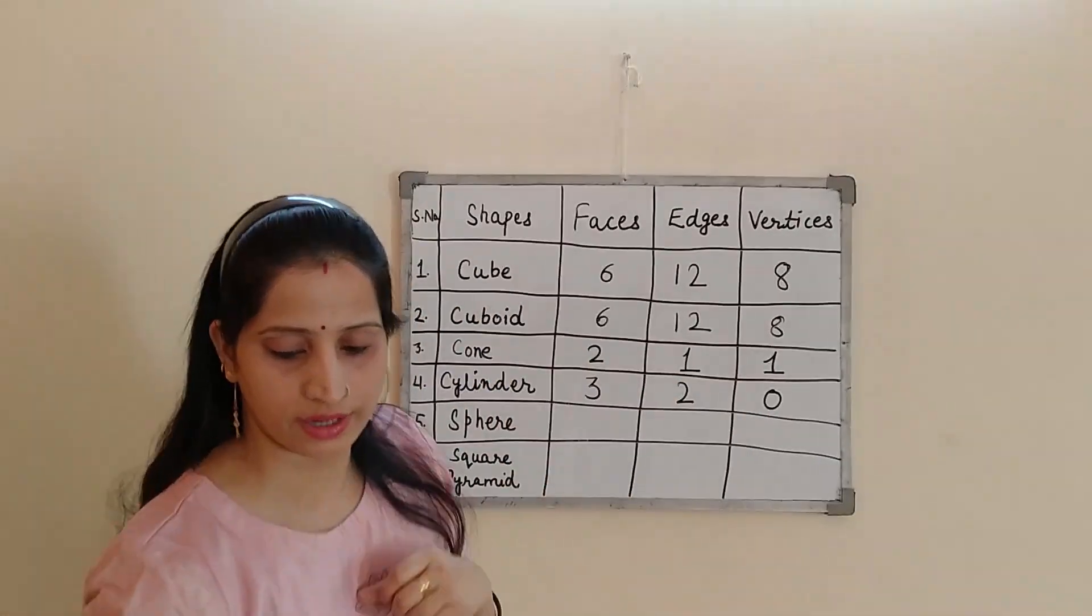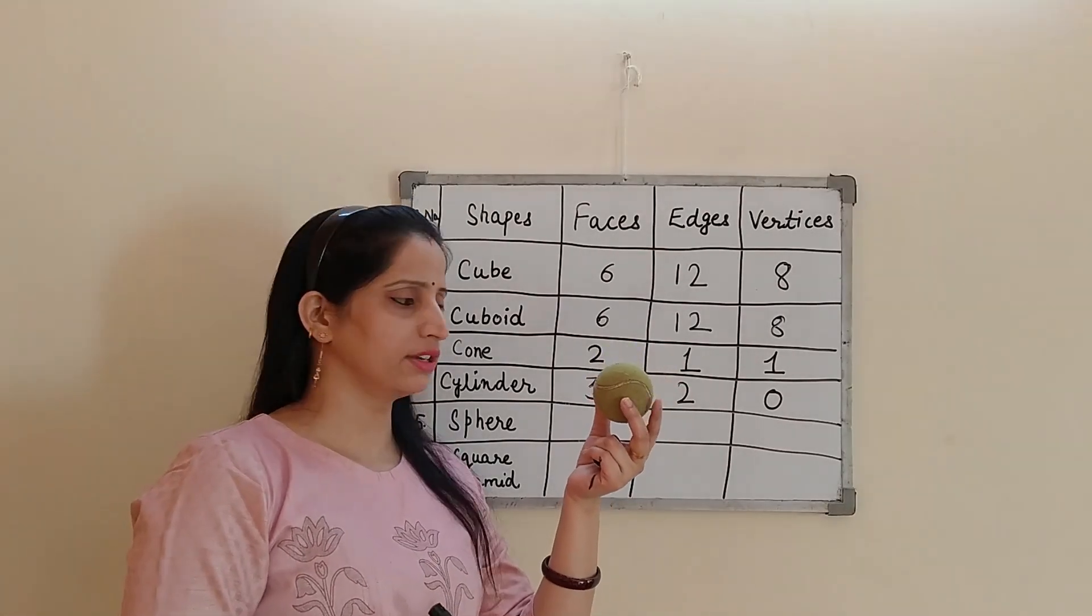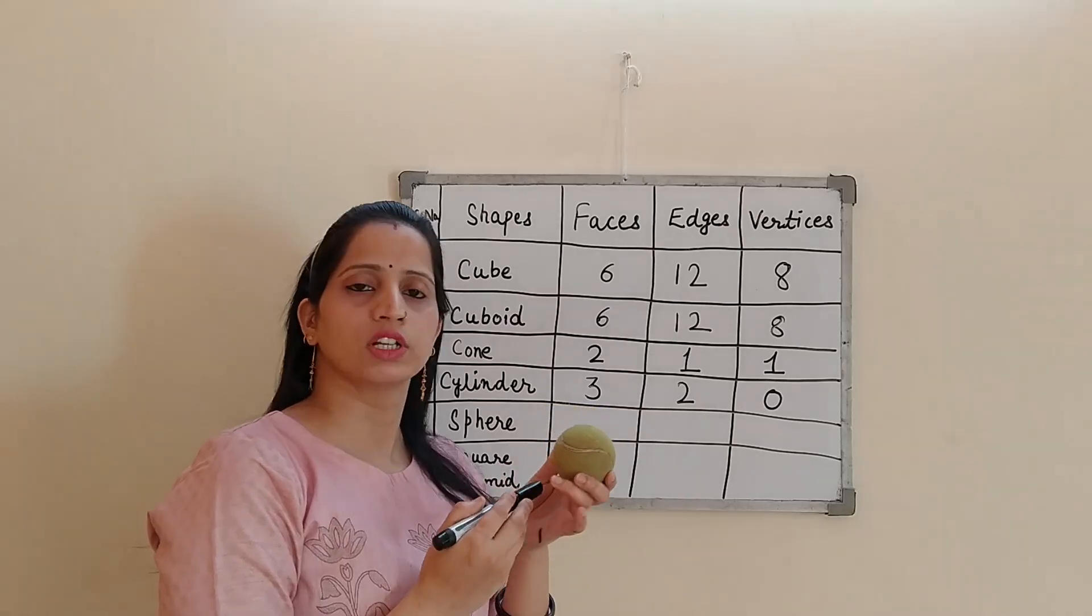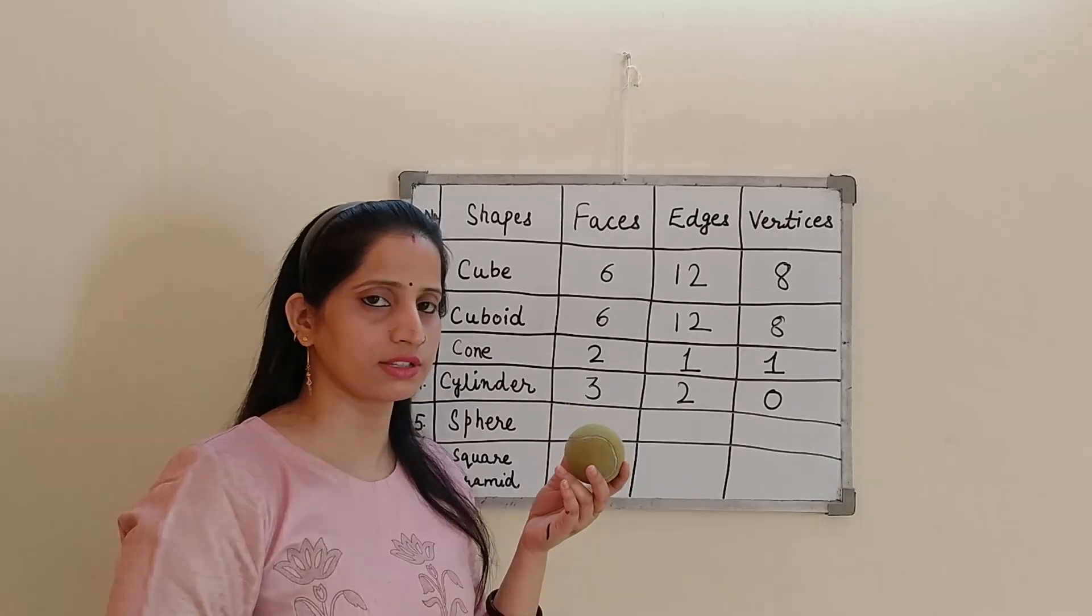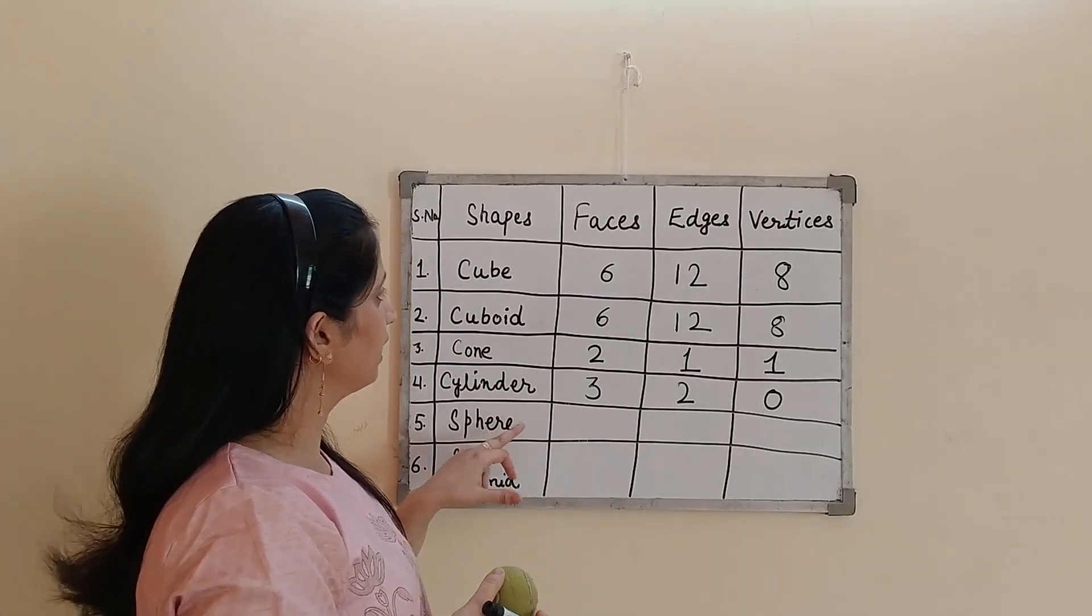Now we will talk about the next one. Sphere. For sphere, this time I have a ball in my hand. You can find many things like football or basketball and globe. These all are the examples of spheres that you can see in your day-to-day life.